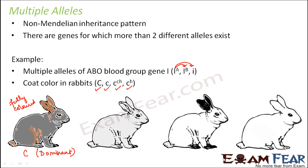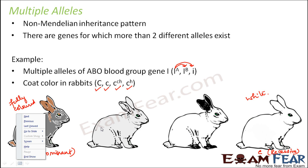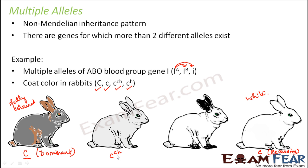Small c codes for a completely white coat and is the recessive trait — it will only be expressed if inherited from both parents. C^CH stands for chinchilla and gives a light grayish coat color. It is dominant, but less dominant than capital C.